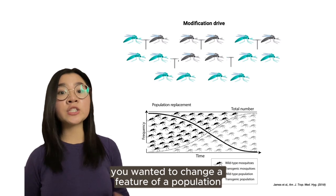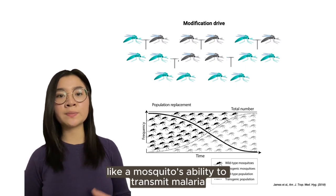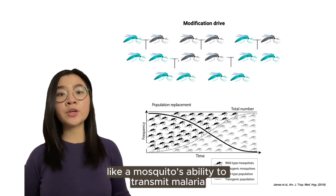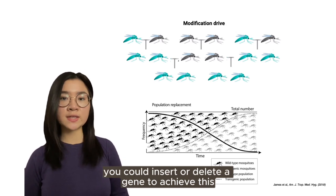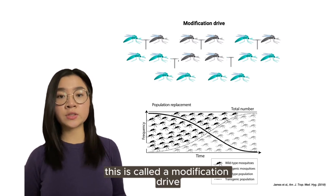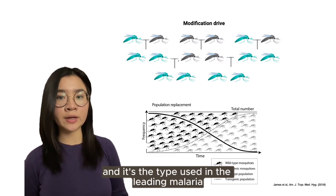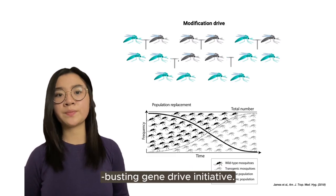If, instead, you wanted to change a feature of a population, like a mosquito's ability to transmit malaria, you could insert or delete a gene to achieve this. This is called the modification drive, and it's the type used in leading malaria-busting gene drive initiatives.